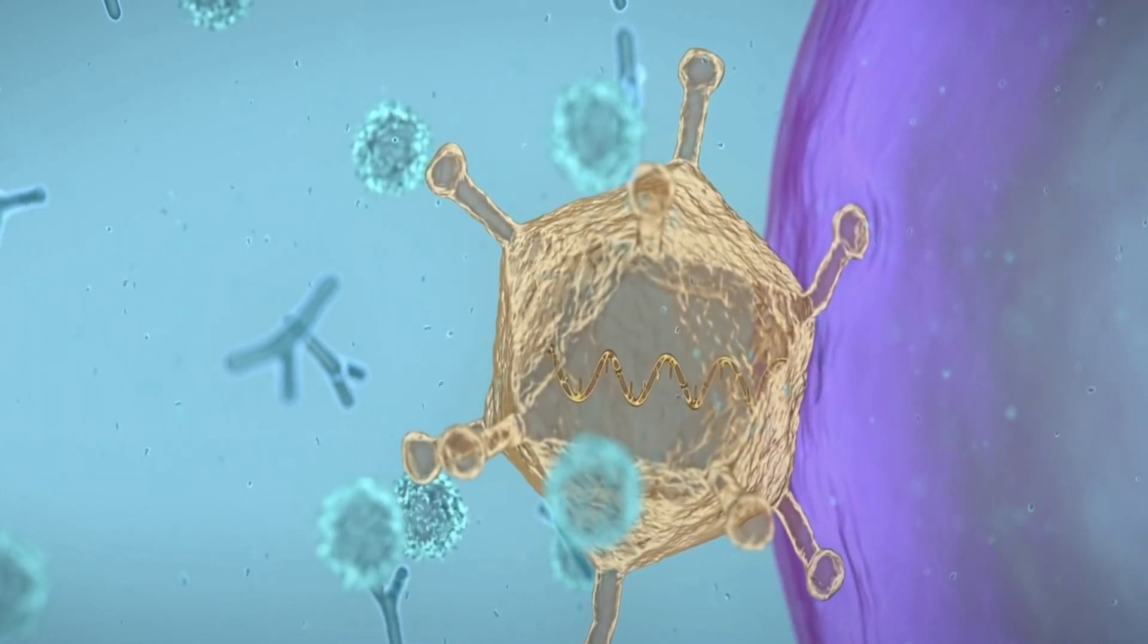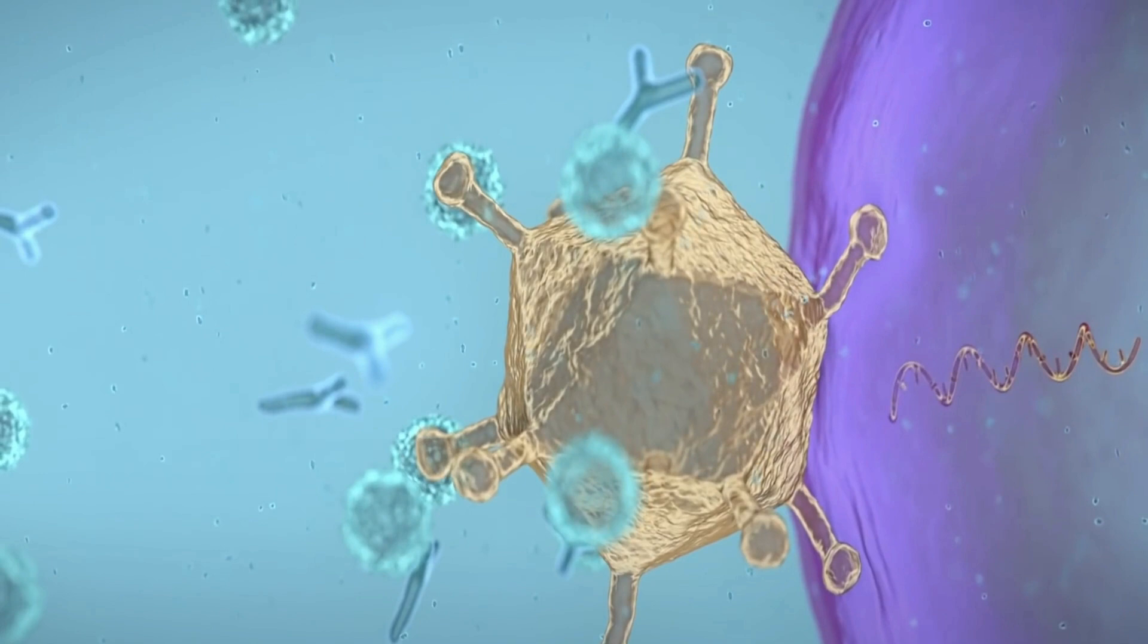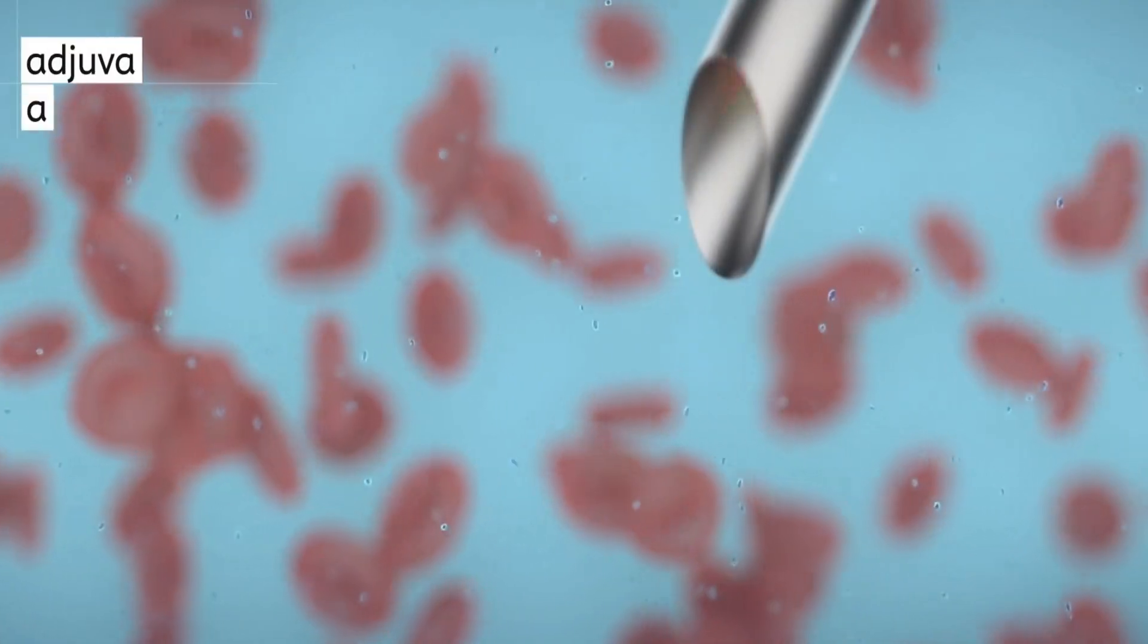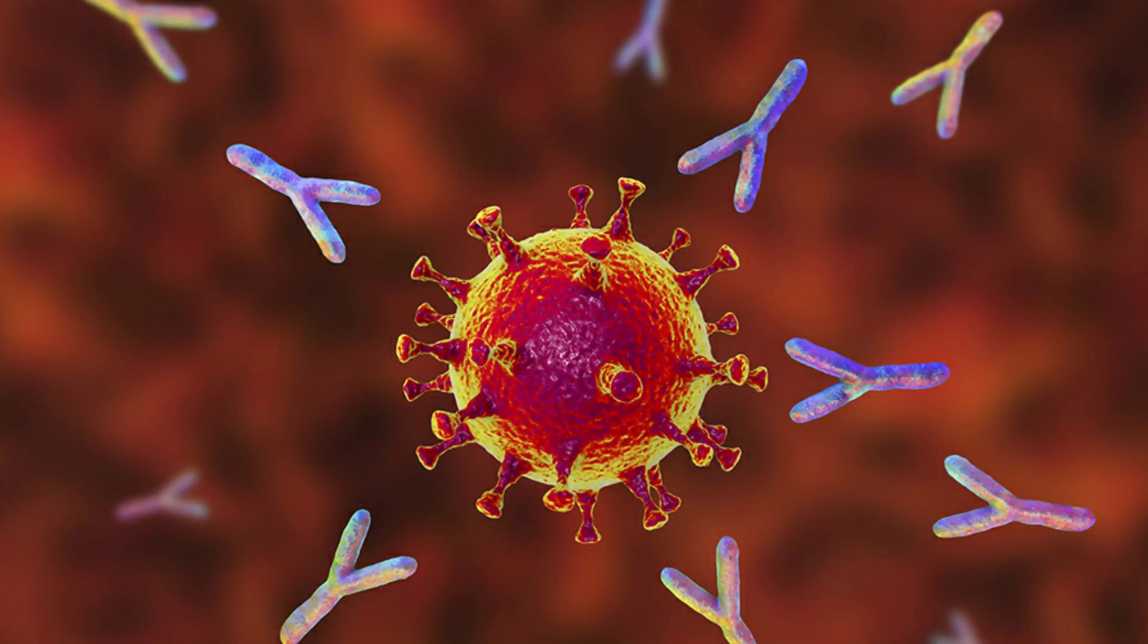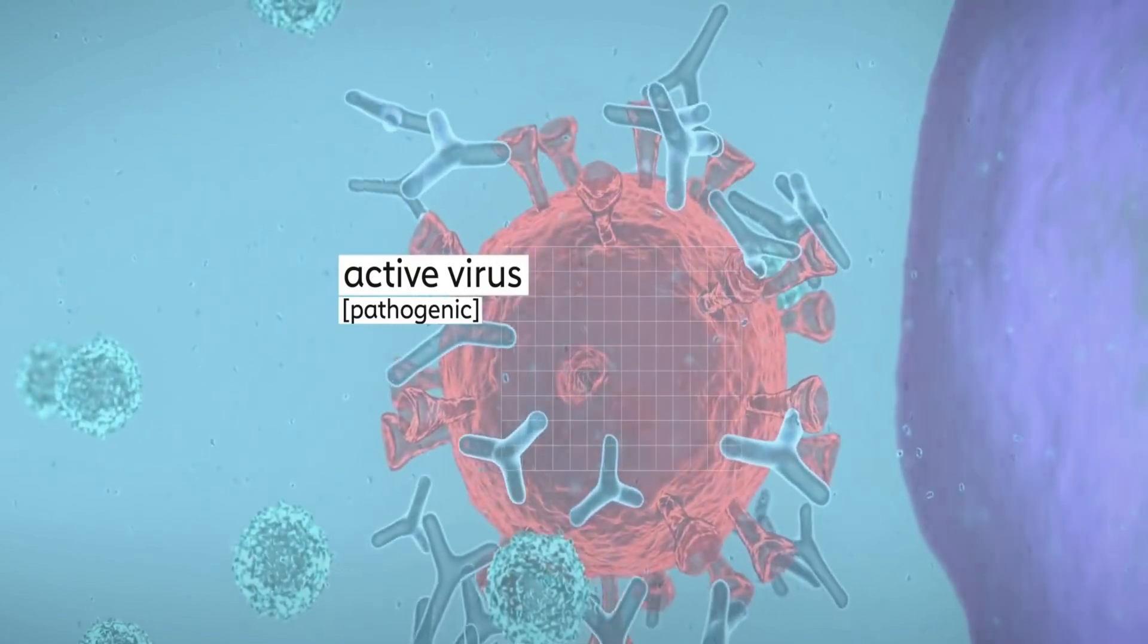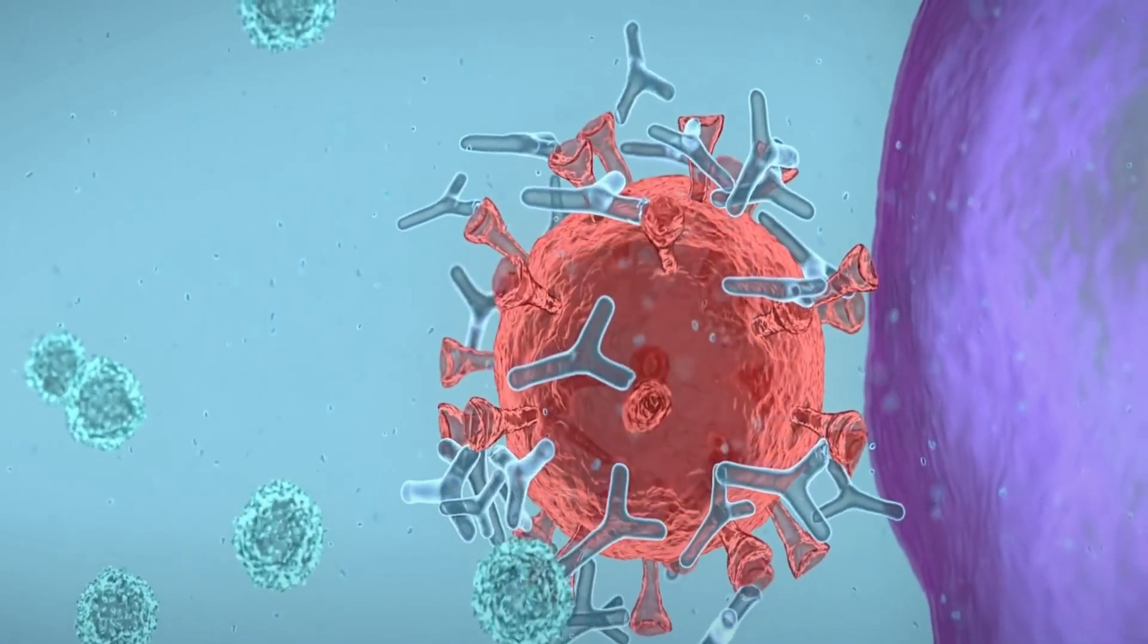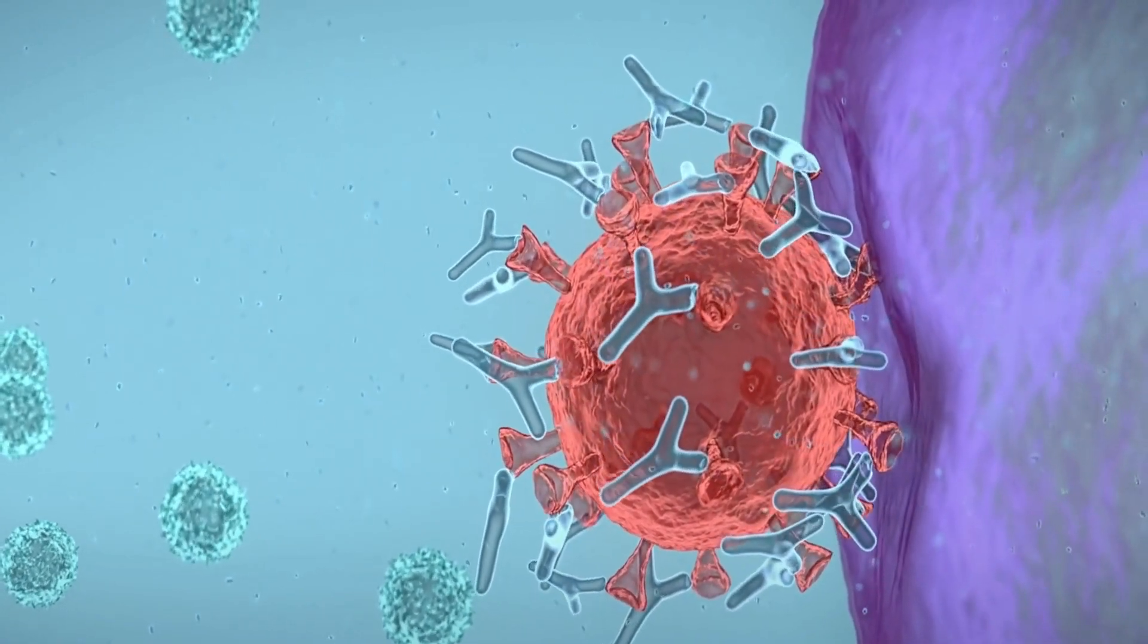Once the viral vector is inside our cells, the genetic material gives cells instructions to make a protein that is unique to the virus that causes COVID-19. Using these instructions, our cells make copies of the protein. This prompts our bodies to build T lymphocytes and B lymphocytes that will remember how to fight that virus if we are infected in the future.